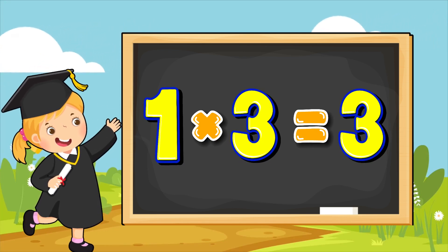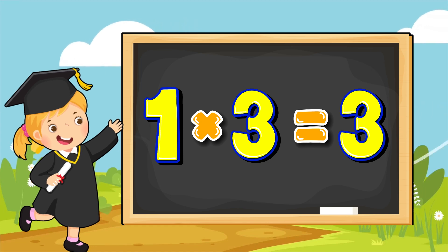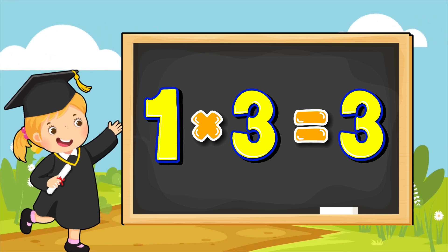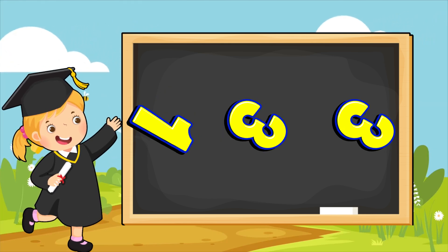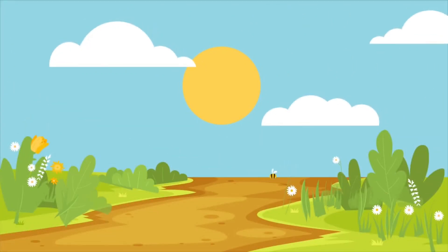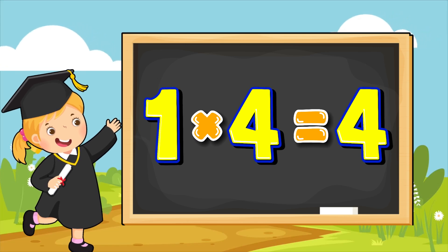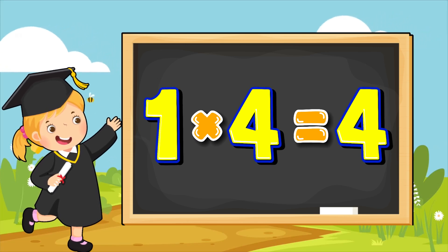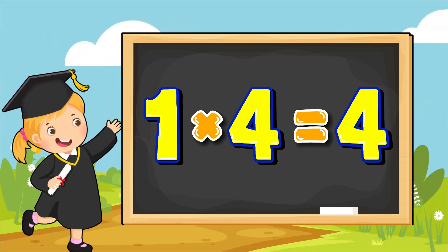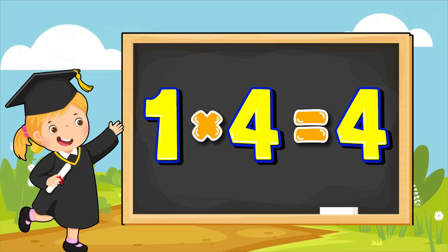1 multiplied by 3 equals to 3. 1 multiplied by 3 equals to 3. 1 multiplied by 4 equals to 4. 1 multiplied by 4 equals to 4.